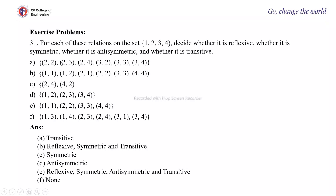For transitivity: (2,2) and (2,3) — so (2,3) must be there, it is. (2,2) and (2,4) — so (2,4) must be there, it is. (2,3) and (3,2) — so (2,2) must be there, it is. (2,2) and (3,3) — so (2,3) must be there. (3,2) and (2,2) — so (3,2) must be there, it is. (3,2) and (2,3) — so (3,3) must be there. (3,2) and (2,4) — so (3,4) must be there, it is. (3,3) and (3,4) — also satisfies the transitive property.